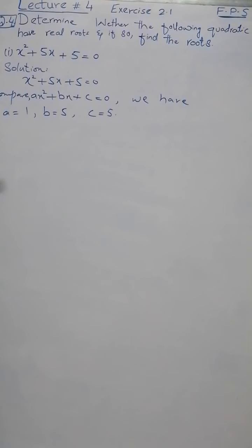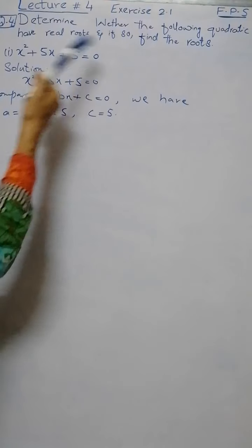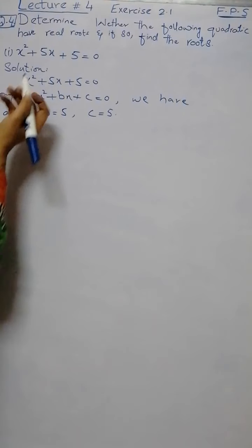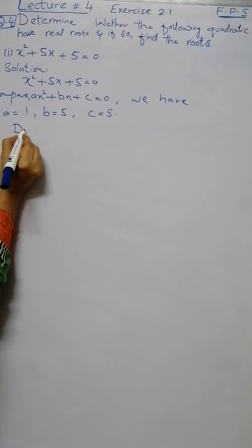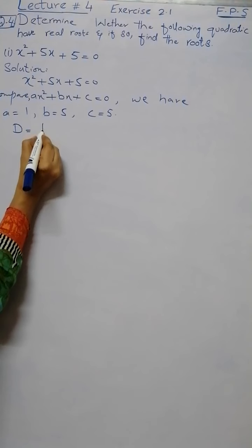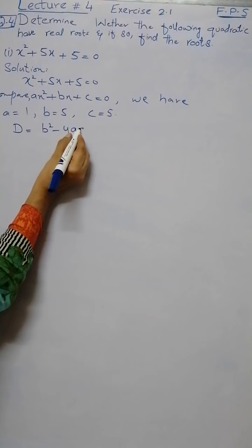In our question, we are going to check whether the equation has real roots or not. As we have already learned, to check the roots, we must use the discriminant, where discriminant is equal to b² - 4ac.